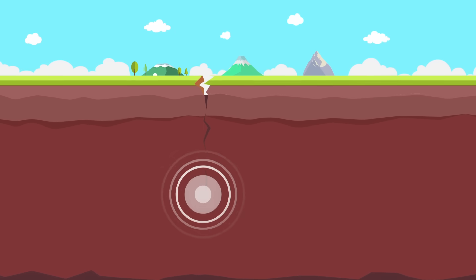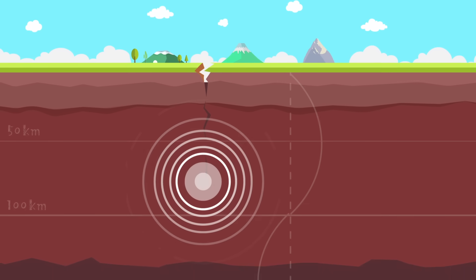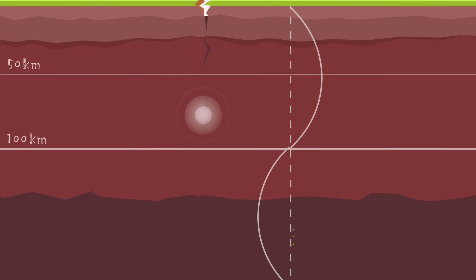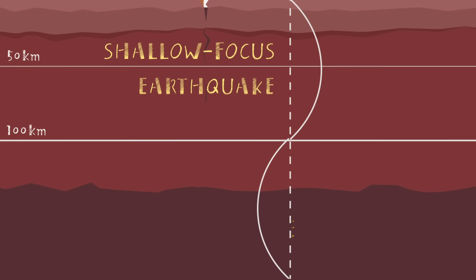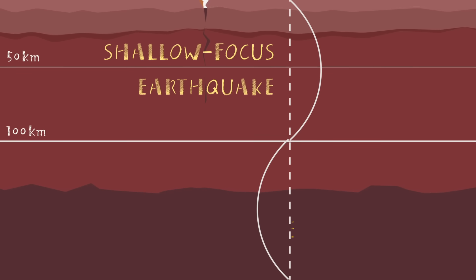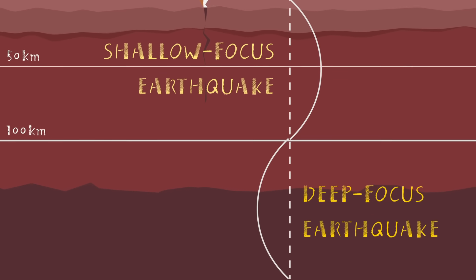Earthquakes are classified according to the depth at which they occur. An earthquake whose focus is less than 100 km deep is called a shallow-focus earthquake, and an earthquake with a focus deeper than 100 km is called a deep-focus earthquake.